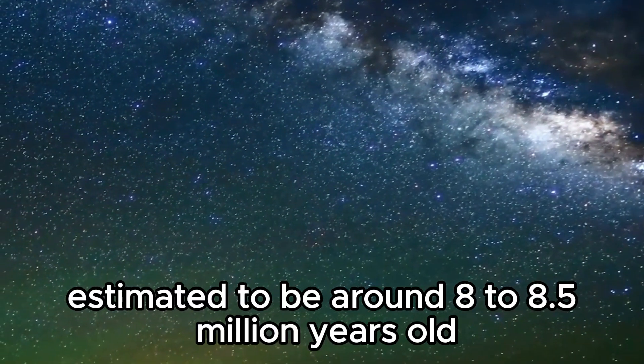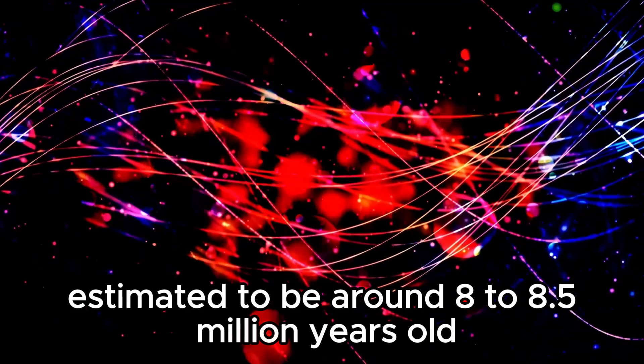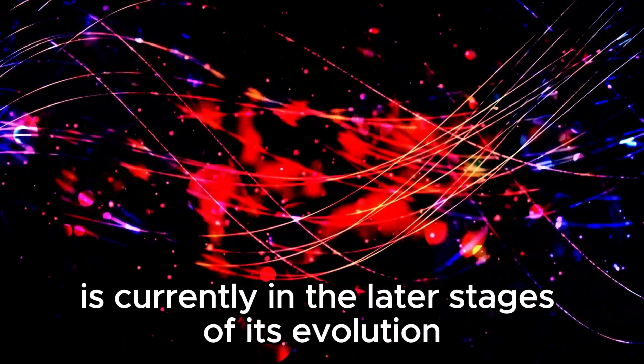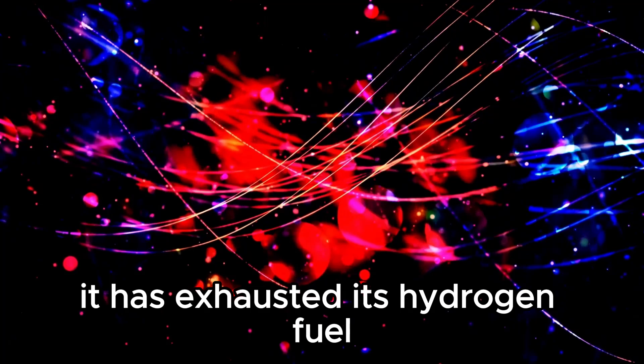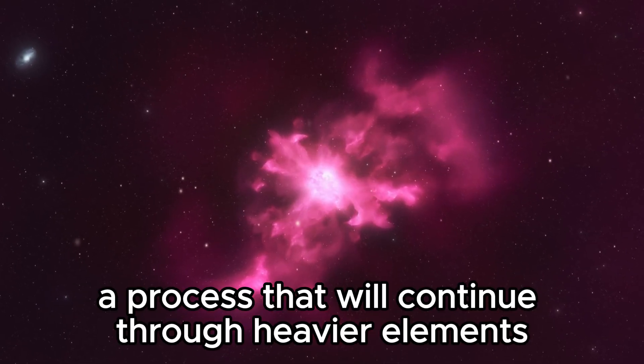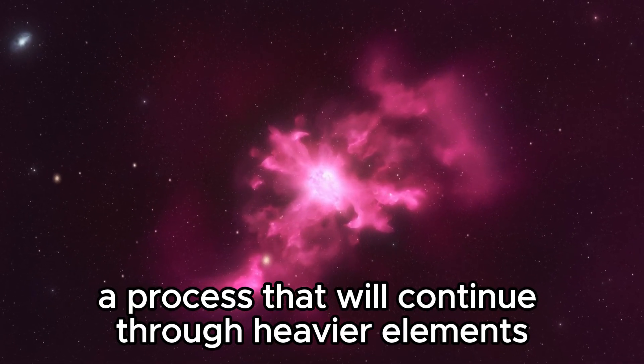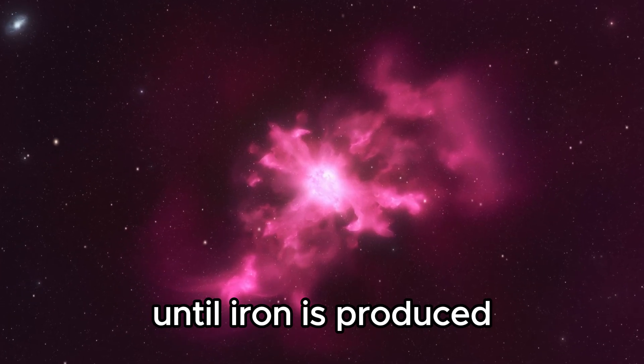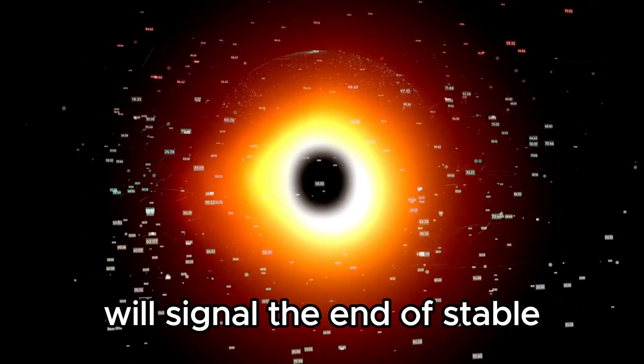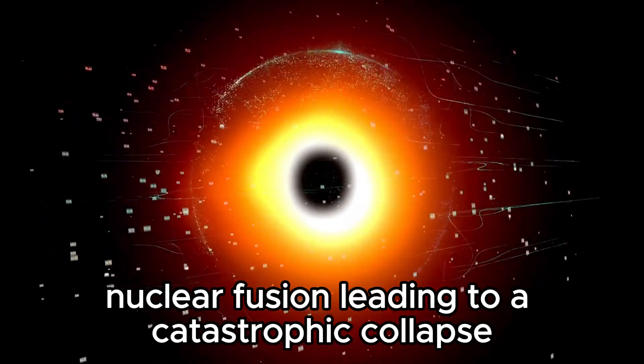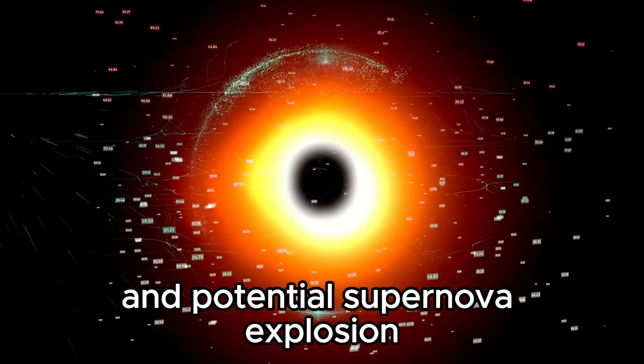Betelgeuse, estimated to be around 8 to 8.5 million years old, is currently in the later stages of its evolution. It has exhausted its hydrogen fuel and transitioned to fusing helium in its core, a process that will continue through heavier elements until iron is produced. The formation of iron in Betelgeuse's core will signal the end of stable nuclear fusion, leading to a catastrophic collapse and potential supernova explosion.